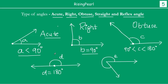Now for this figure, D is exactly 180 degrees. So in this case, this is a straight line — we call this a straight angle.